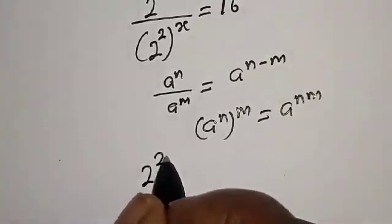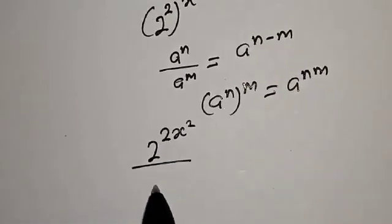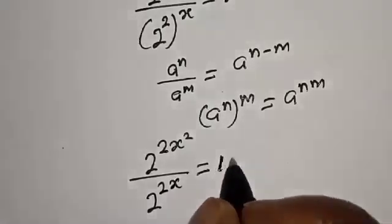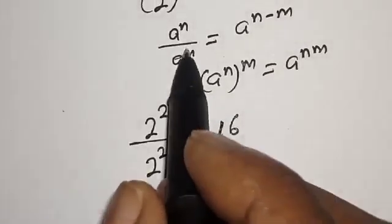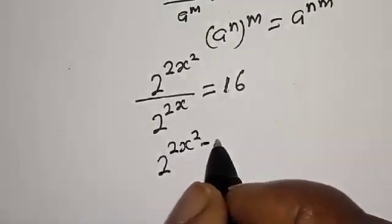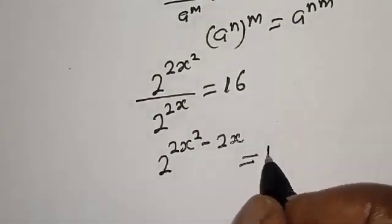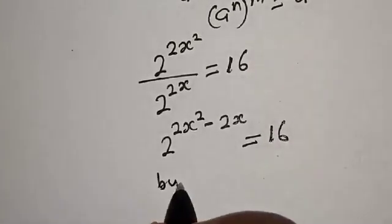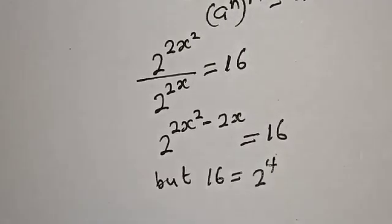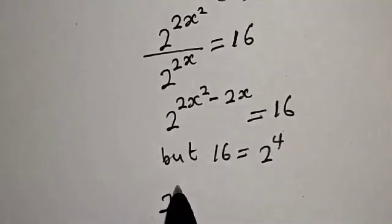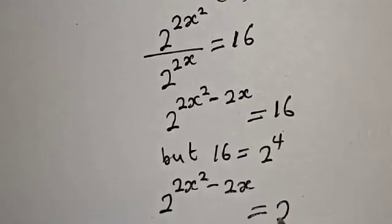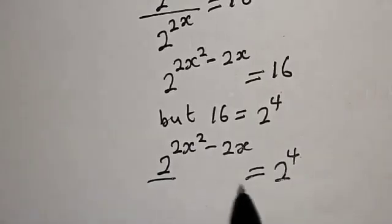Applying these rules, the equation becomes 2 raised to power 2s squared divided by 2 raised to power 2s, which equals 16. Using the division rule, this gives 2 raised to power 2s squared minus 2s equal to 16. Since 16 equals 2 raised to power 4, we have 2 raised to power 2s squared minus 2s equal to 2 raised to power 4.